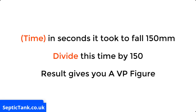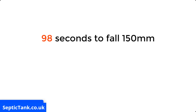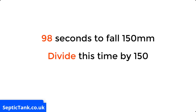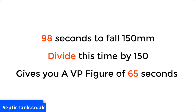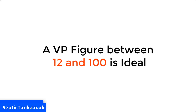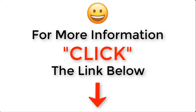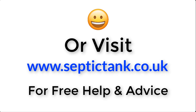For example, let's say it took 98 seconds for the water in the soakaway hole to fall 150mm — you just divide 98 by 150, and that gives you a Vp figure of 0.65 seconds, which is brilliant because a Vp figure between 12 and 100 is ideal. For more information, just click the link below this video or visit septictank.co.uk for free help and advice.